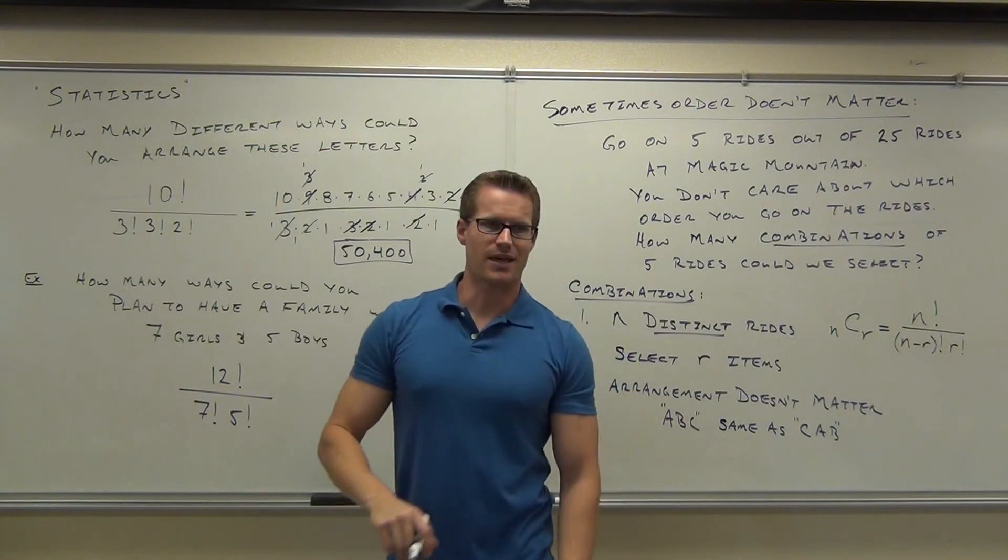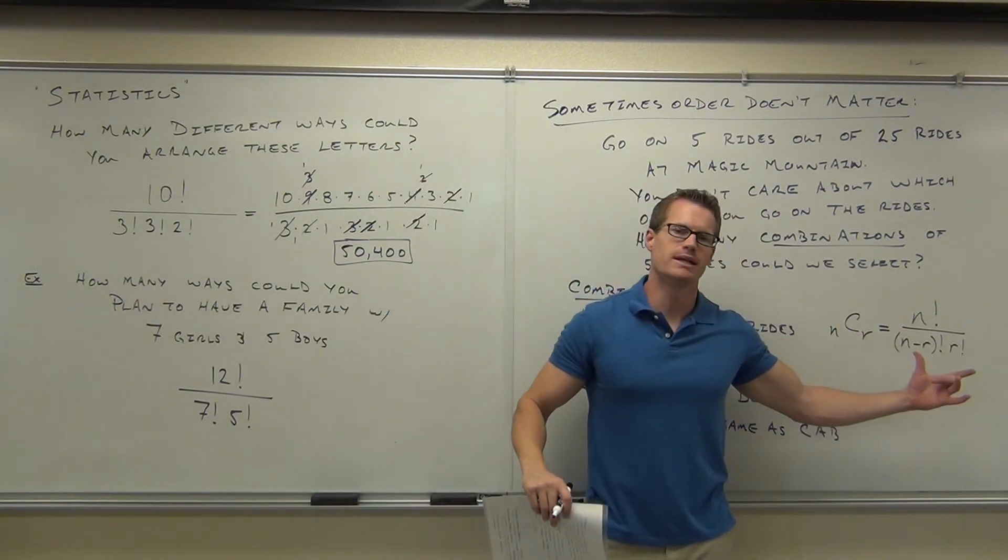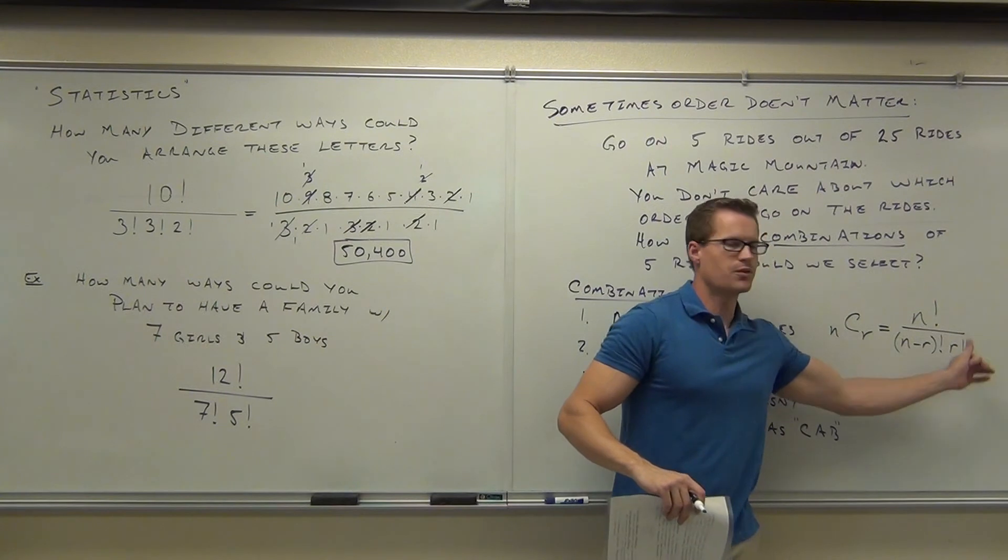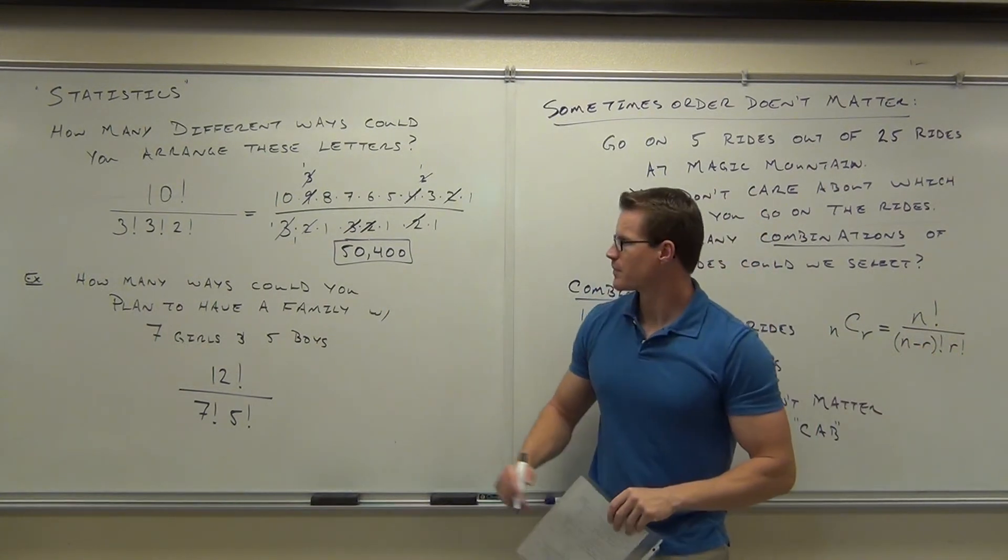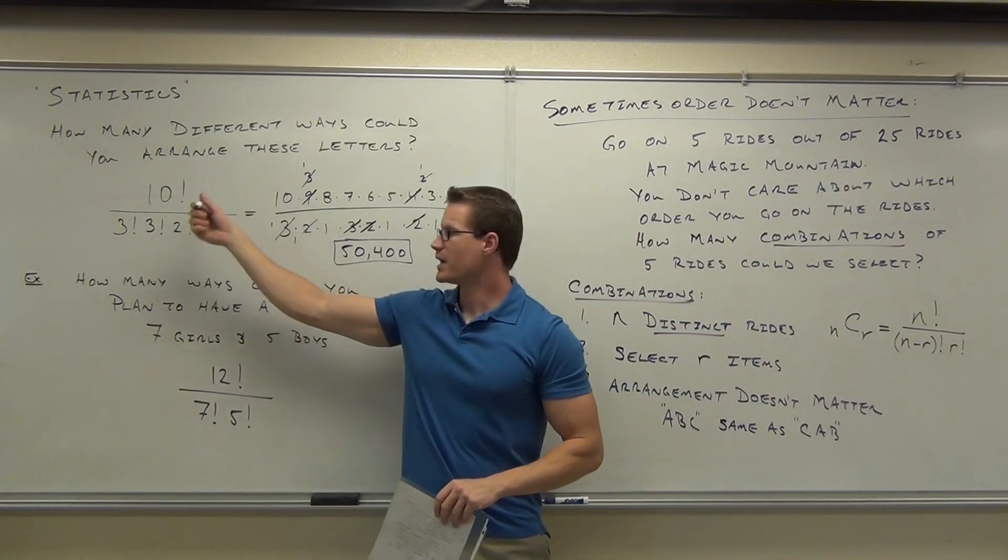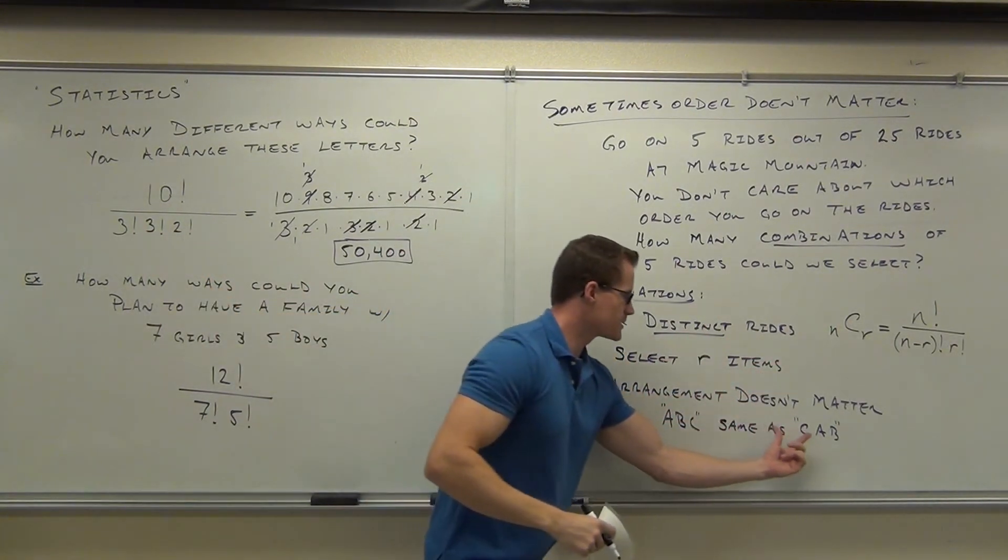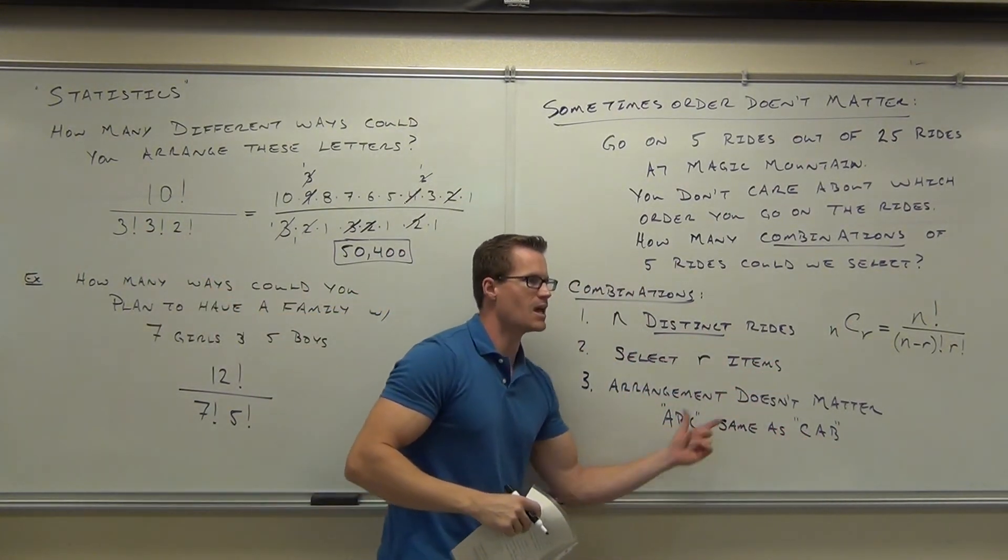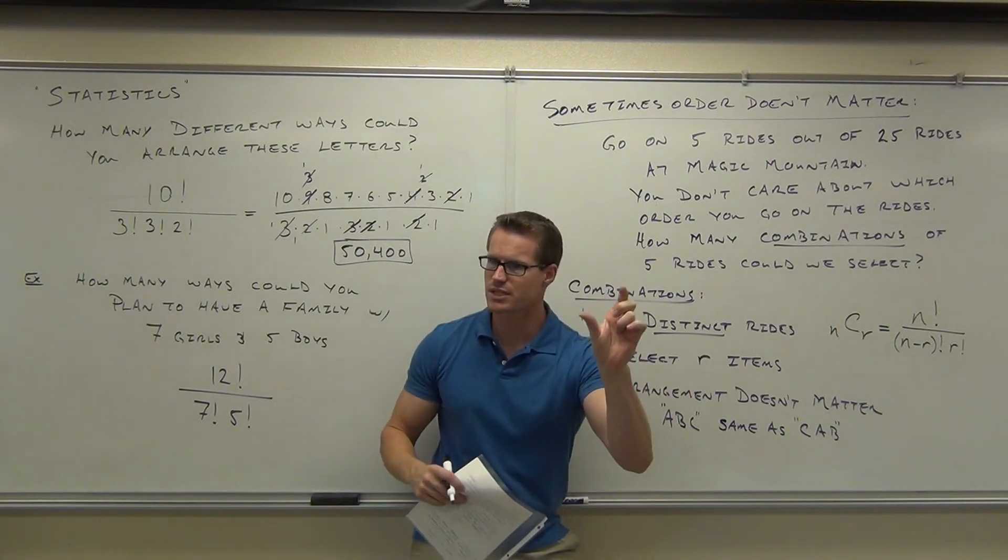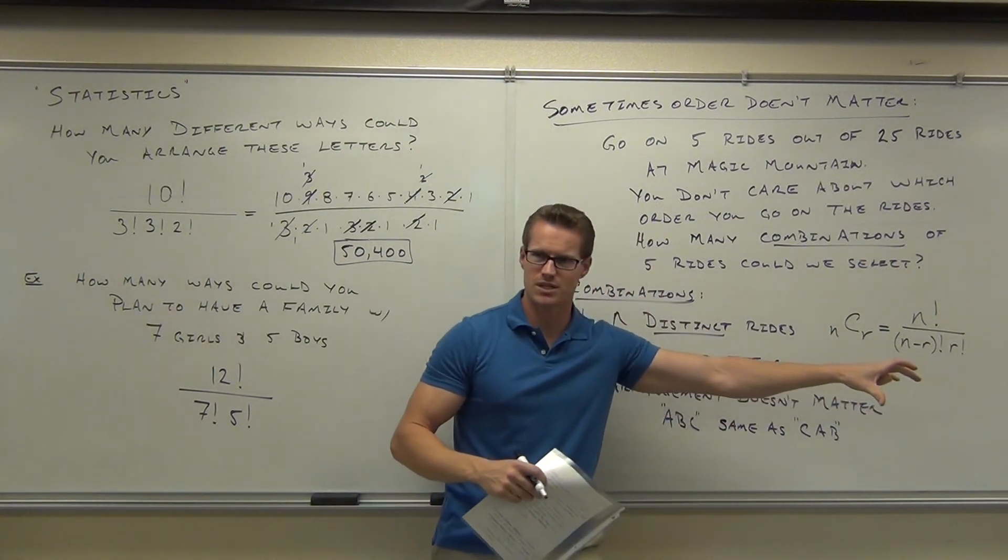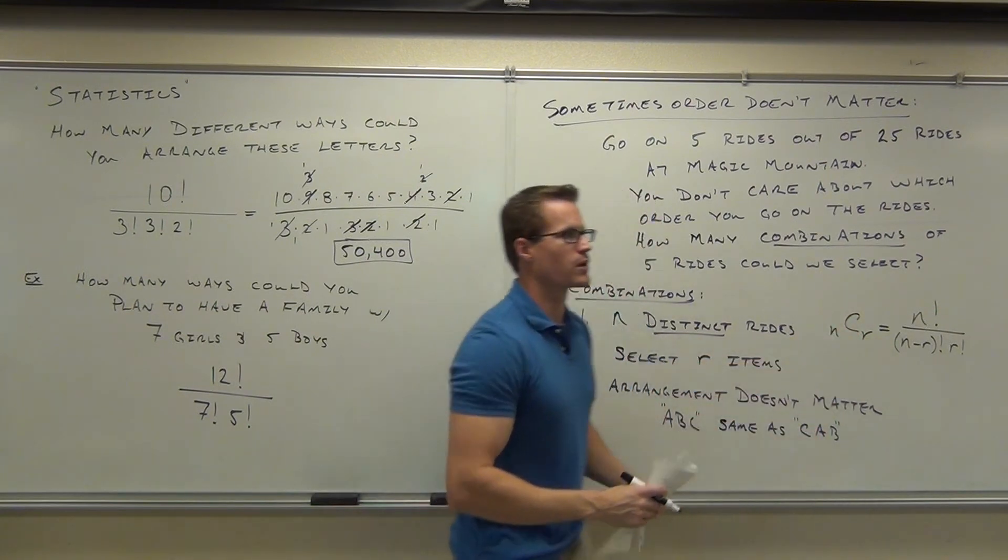This is kind of combining a couple ideas here. This is treating those R items as nondistinct. It's dividing out, treating them like nondistinct, because look what happens. This says if CAB is the same as ABC, that's treating those three items as nondistinct items, and that's how you get rid of them. Do you see the similarity there between that? That's what that's doing for you.